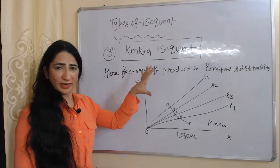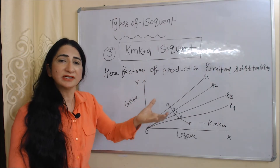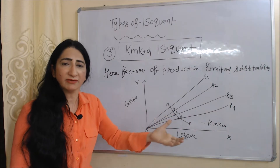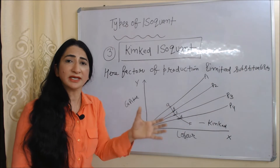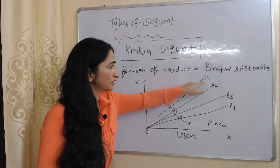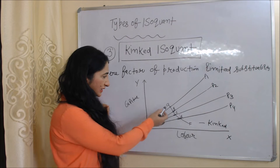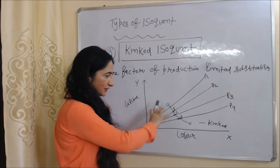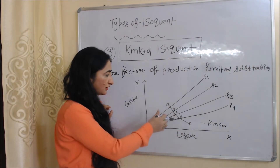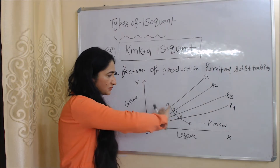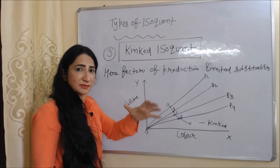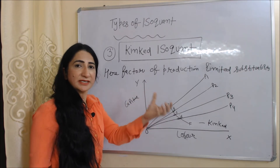The next type is the kinked isoquant. According to this, factors of production have limited substitutability — at some limit we can substitute factors for each other. In the diagram, we have four methods of production P1, P2, P3, and P4, with one kinked curve. We can substitute factors of production between points A, B, C, D, and F, but beyond these points, substitution is not possible.